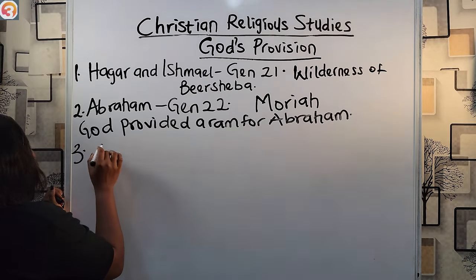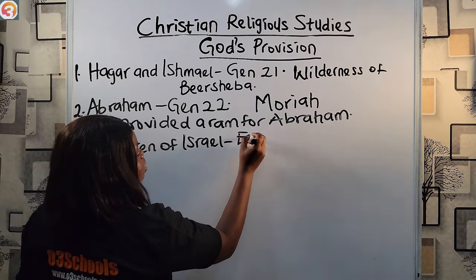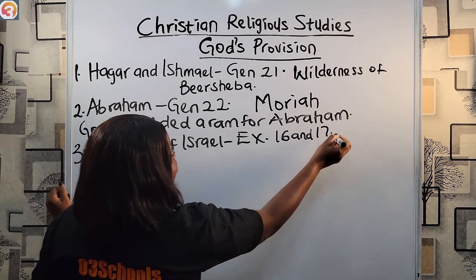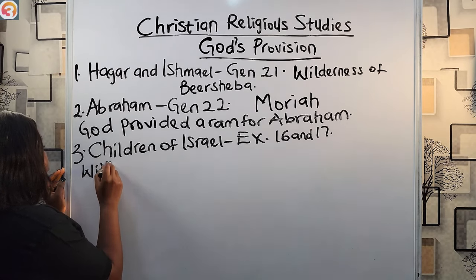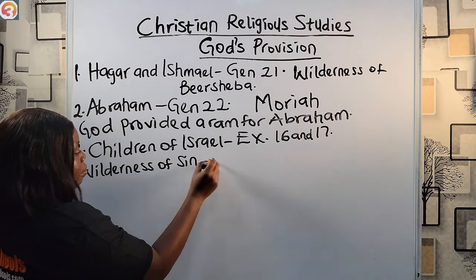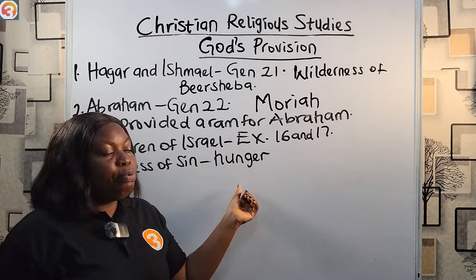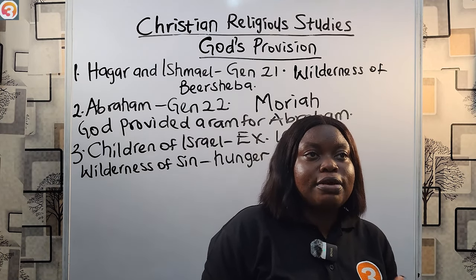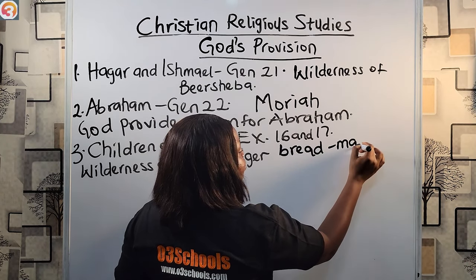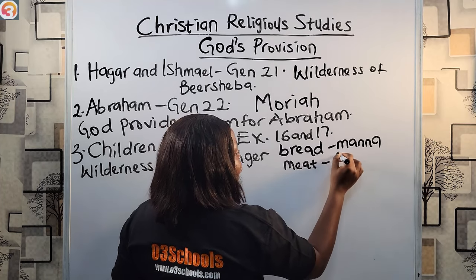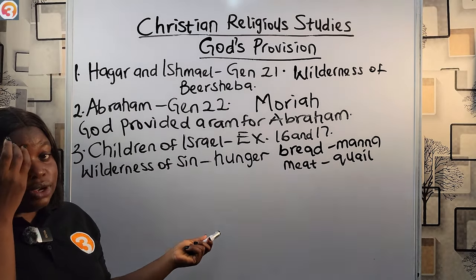Another instance where God provided was for the children of Israel, found in Exodus chapters 16 and 17. God provided for the children of Israel in the wilderness. When they came to the wilderness of Sin and complained of hunger, God promised to send them bread from heaven in the morning and meat at night. The bread they called manna, and the meat, quail. So in the wilderness of Sin, God provided manna and quail for the Israelites to satisfy their hunger.